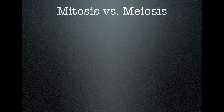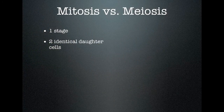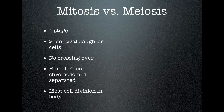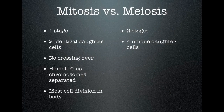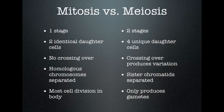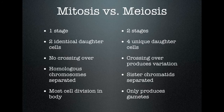Finally, a recap and a this-versus-that. In mitosis: one stage, two identical daughter cells, no crossing over, homologous chromosomes are separated, and most cell division in the body is via mitosis. For meiosis: we are producing gametes, using two stages, making four unique daughter cells, crossing over produces variation, sister chromatids are being separated, and this is only for producing gametes. That covers everything we need to talk about in reference to meiosis. Hope you were able to follow along — thanks for joining us on the Lab 207 webcast. We'll see you again.